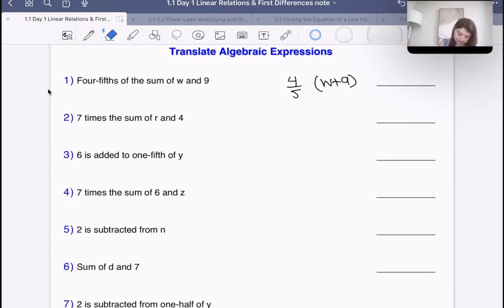The second one says seven times the sum of r and 4. What is the sum of r and 4? That's r plus 4. Then it's seven times whatever that sum is, so the seven goes on our left.